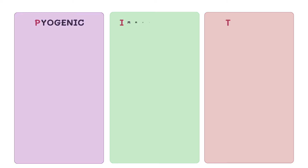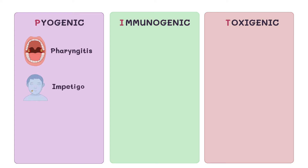In regards to the clinical importance of Streptococcus pyogenes, it can cause many diseases in the human body. We will categorize these diseases based on pathogenesis into three groups using the mnemonic: PIT — Pyogenic, Immunogenic, and Toxigenic. Pyogenic includes infections of the skin and mucous membranes: pharyngitis, impetigo, erysipelas, and cellulitis.